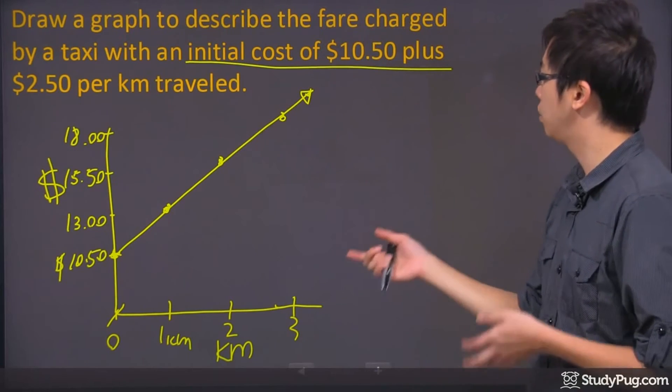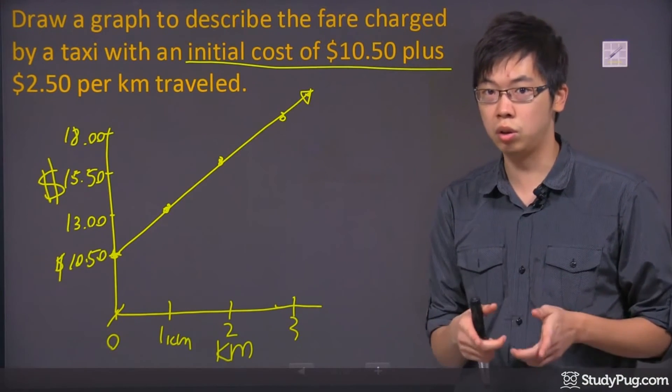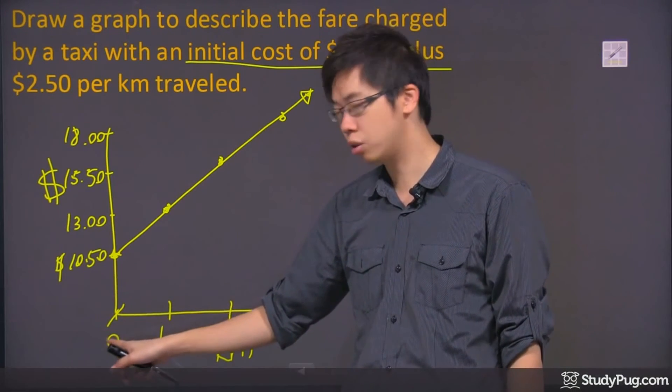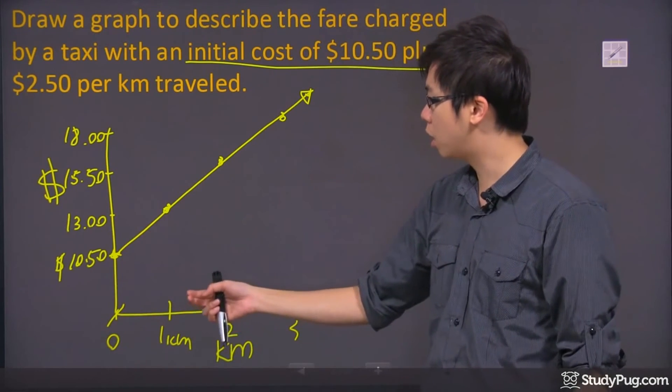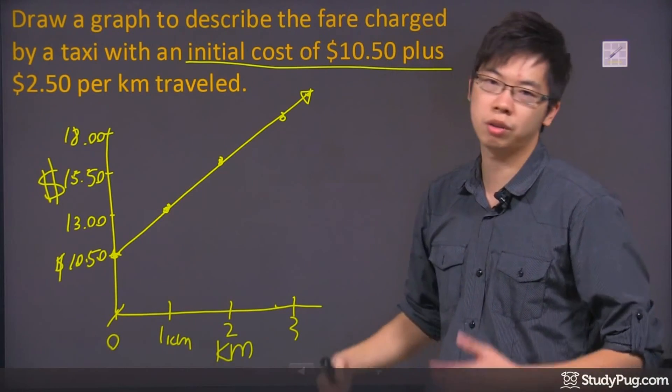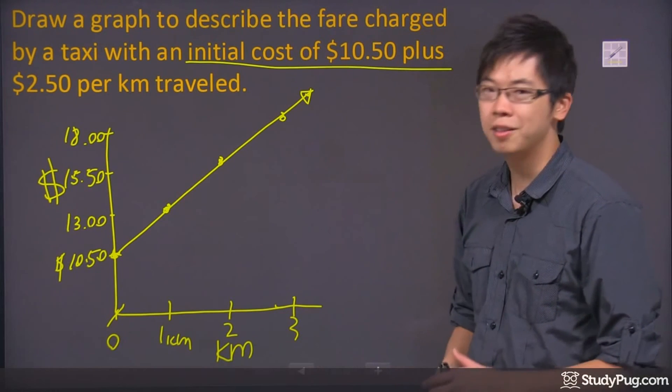So this is a graph that describes the fare charged to you if you take the taxi with the initial cost of $10.50 right here to start off at zero kilometer and for every kilometer, the graph will go up by $2.50. Thanks for watching.